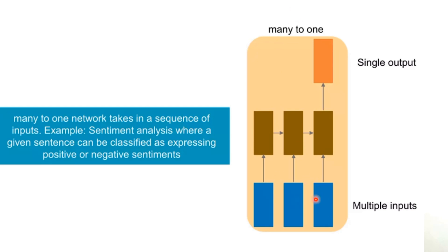Many-to-one provides multiple inputs and gets a single output. An example is sentiment analysis. Given a sentence, it can be classified as expressing either a positive or negative sentiment.